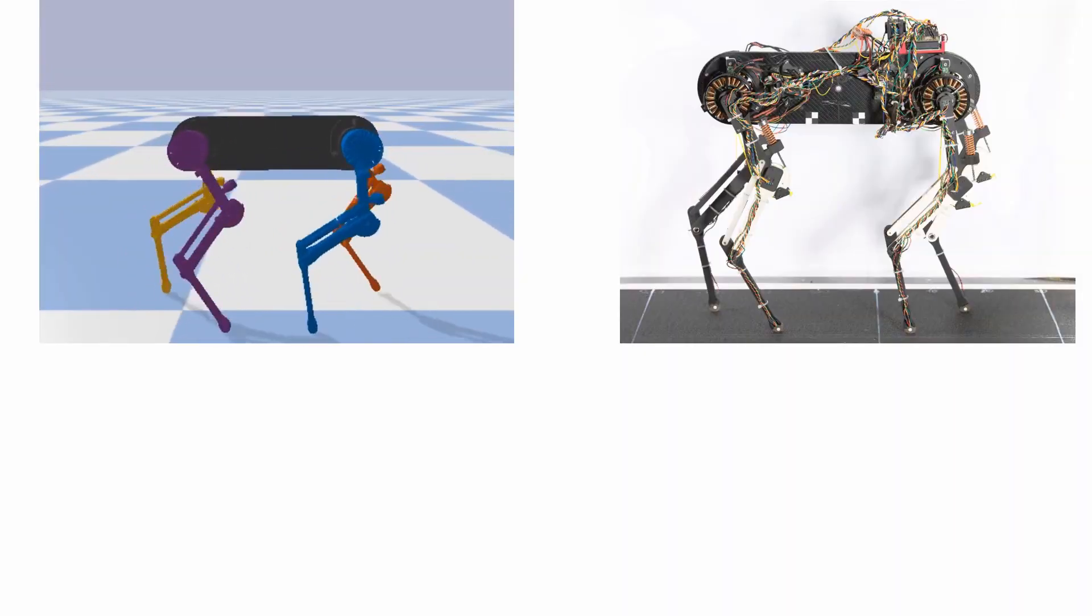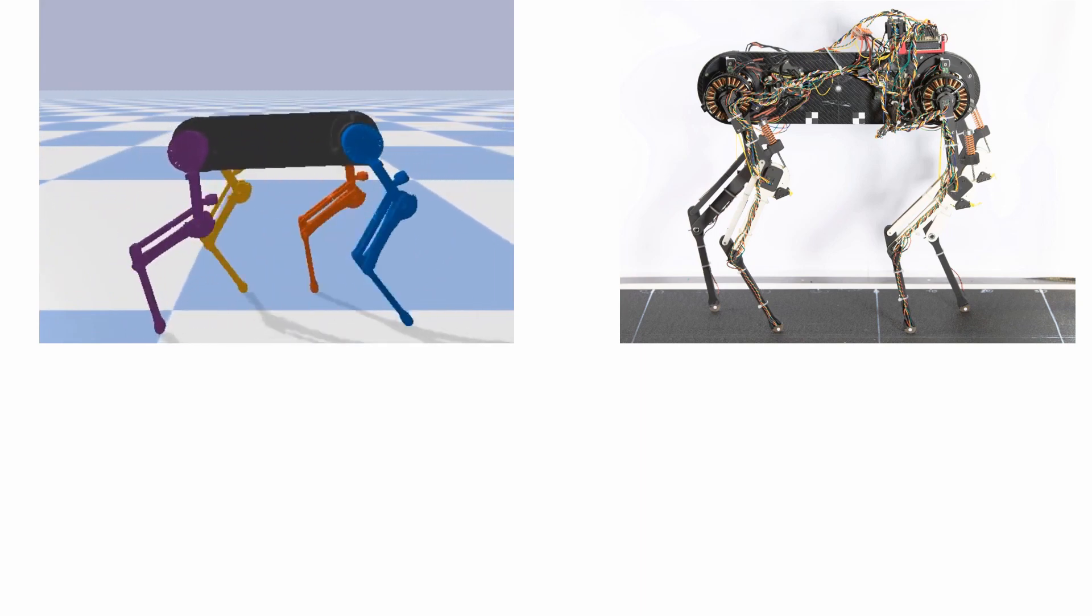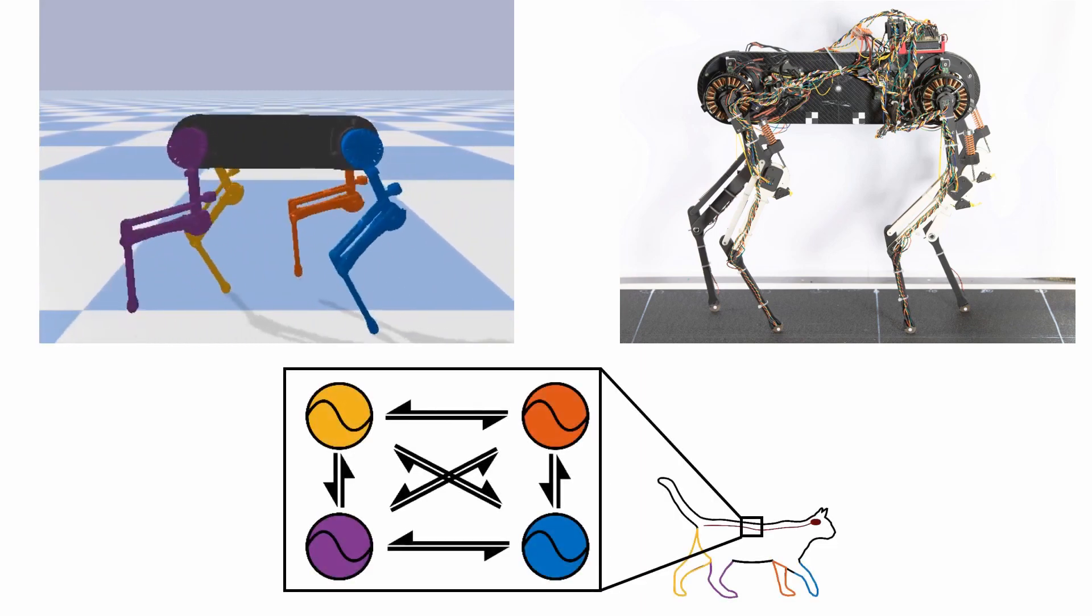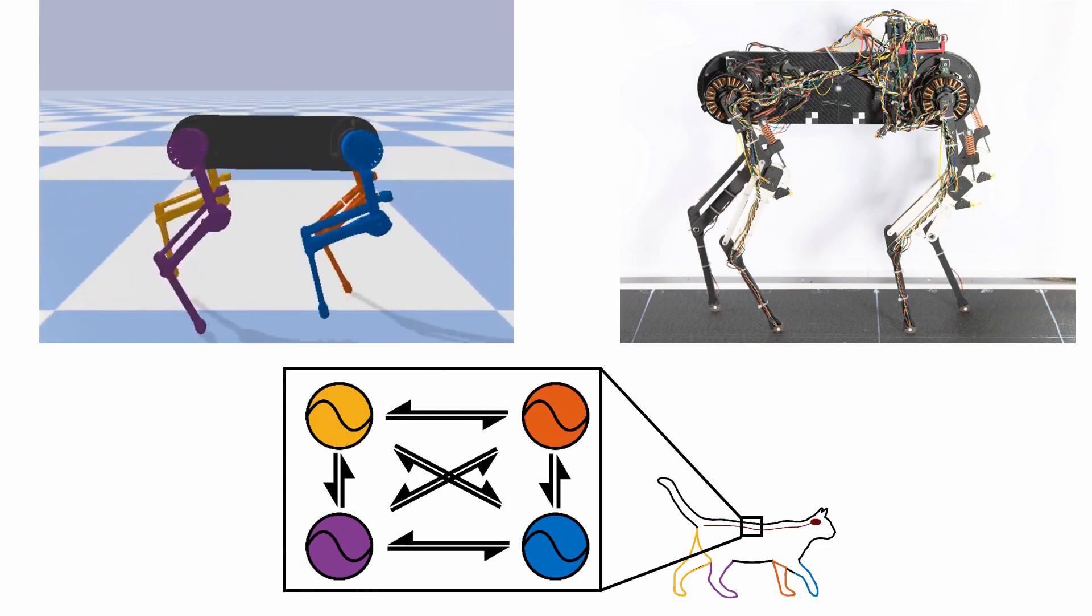In a research project at the intersection of robotics and biology, which was published at Nature Machine Intelligence, we investigate how animals learn to walk and learn from mistakes, such as stumbling.